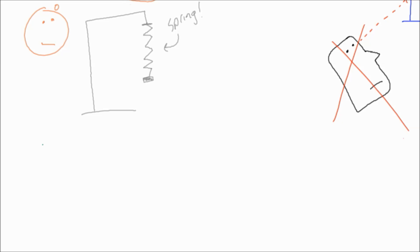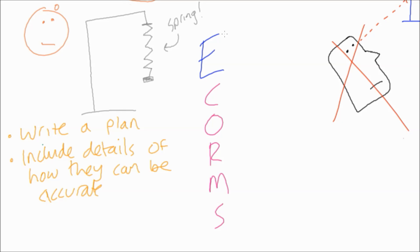So the question tells us what he wants to do and then follows up with some additional bits to help us think. Write a plan for the student's investigation. Make sure you include details of how they can make accurate measurements. So the first thing you're going to need to do is think of CORMS, or ECORMS in fact, the improved version.